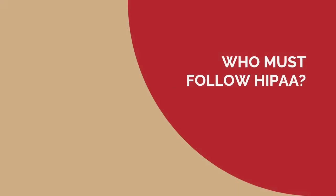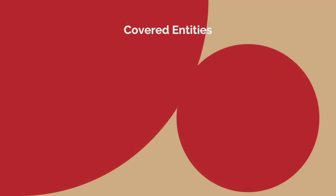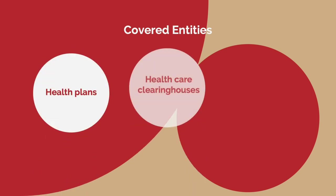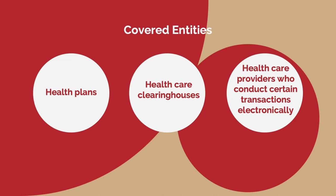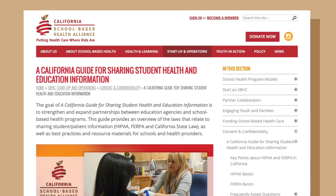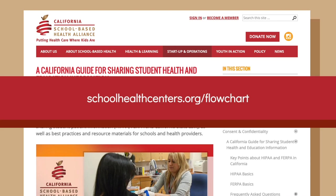Now let's look at who must follow HIPAA. HIPAA applies to records created by covered entities and business associates. Covered entities can include health plans, health care clearinghouses, and health care providers. There are a few health care providers whose records may not be subject to HIPAA — that may be because they don't conduct certain transactions electronically or because another law supersedes. When a health care provider is working in a school setting, their records may be subject to HIPAA and California Medical Confidentiality Law, or they may be subject to FERPA, the Family Educational Rights and Privacy Act. You can find a flowchart to help at schoolhealthcenters.org/flowchart.